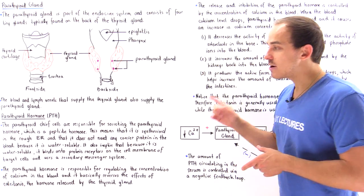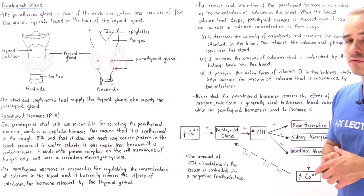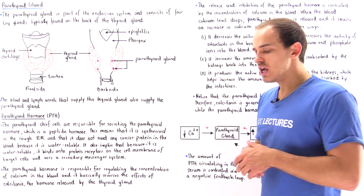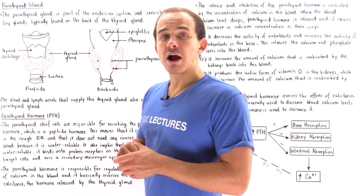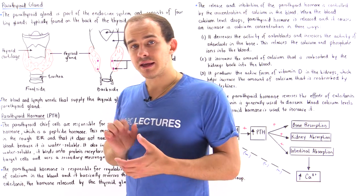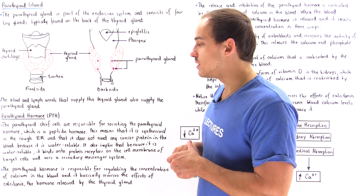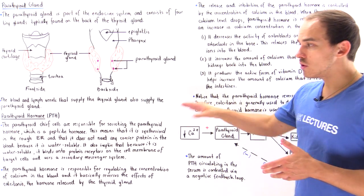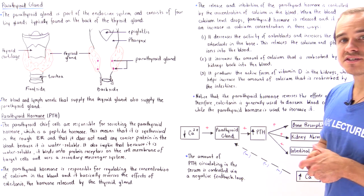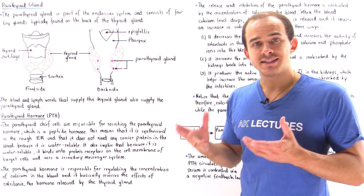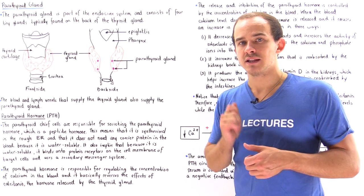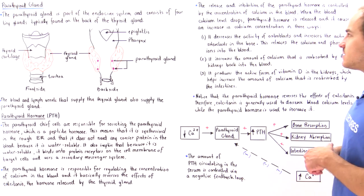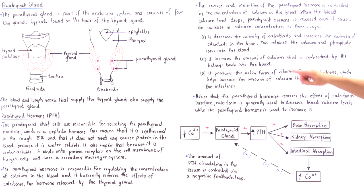What the parathyroid hormone does is it increases the concentration of our calcium inside our blood. This type of hormone is responsible for maintaining and regulating the concentration of calcium inside our blood.